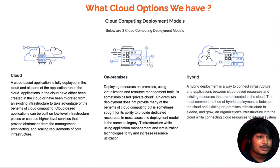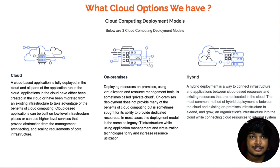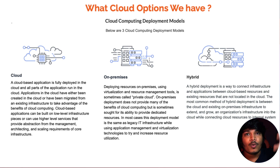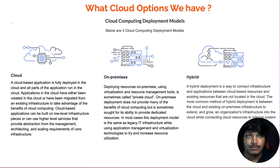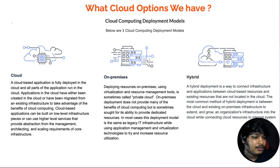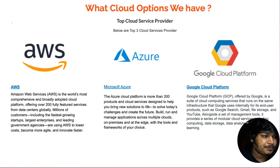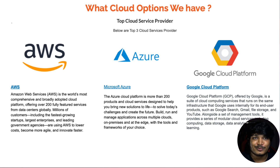Hybrid deployment is used when you have regulatory requirements — some applications must run inside the office as internal applications that can't be public. Those stay on-premise. Applications that are user-facing or consumer-facing go to the cloud. That's how hybrid deployment works.